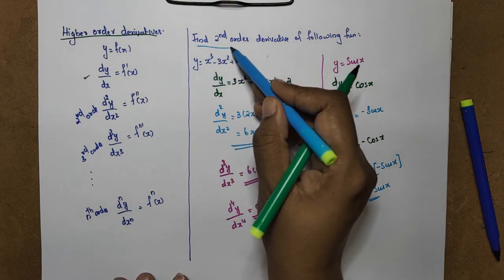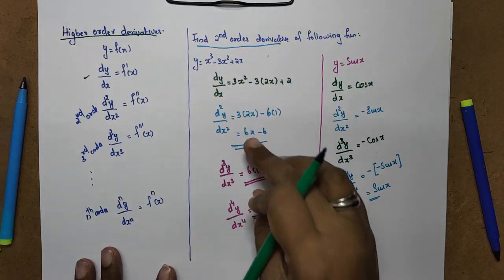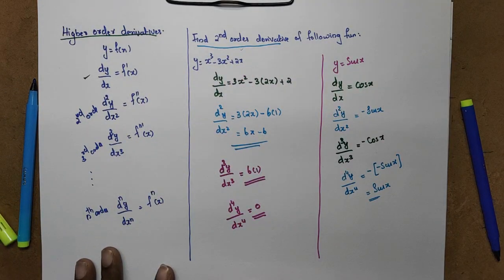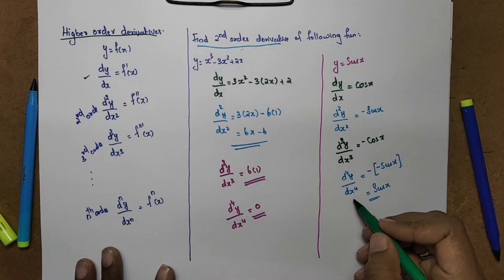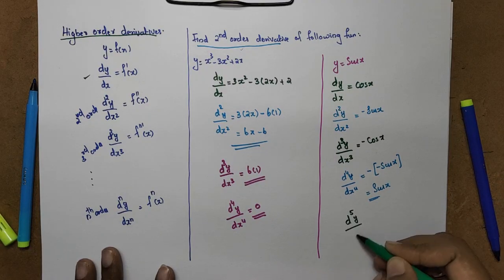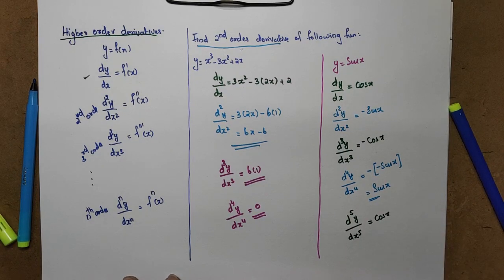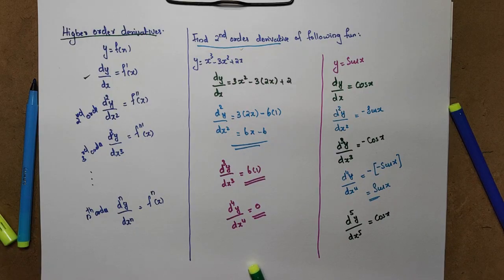Then, for the question about higher-order derivatives of sin x: you can also find d⁵y/dx⁵, then d⁶y/dx⁶, and so on. Sin x repeats in a cycle — sin x, cos x, minus sin x, minus cos x, and back to sin x. You can see the pattern repeating in the same way.